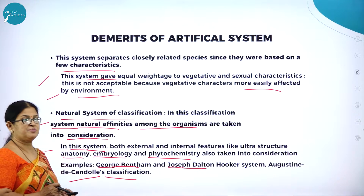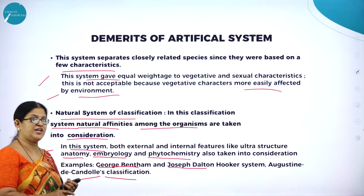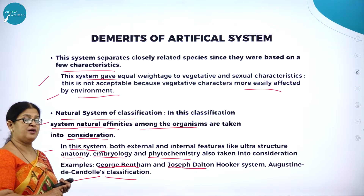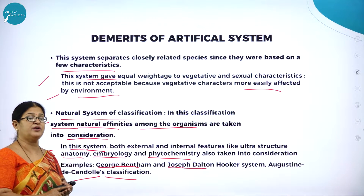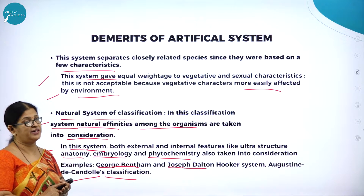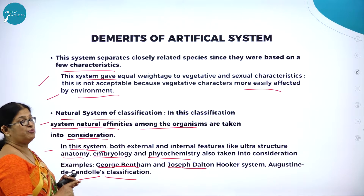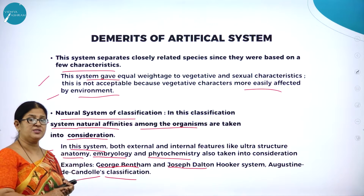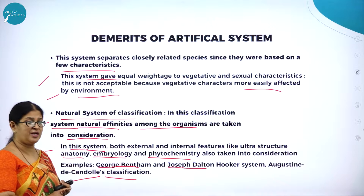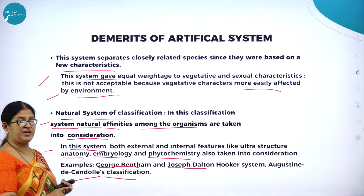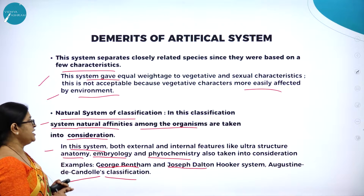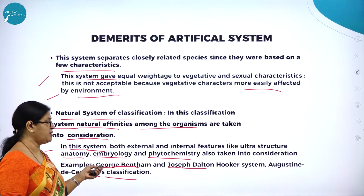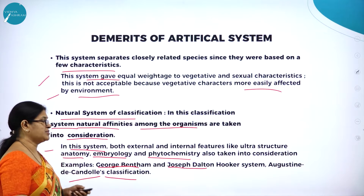The three important systems of classification are: artificial system, natural system, and phylogenetic system. The artificial system was based on morphological characters, giving equal weightage to vegetative and sexual characters — not acceptable because vegetative characters change with environmental conditions. In the natural system, put forward by Bentham and Hooker, both external and internal features like ultrastructure, anatomical, embryological, and phytochemical features were considered.